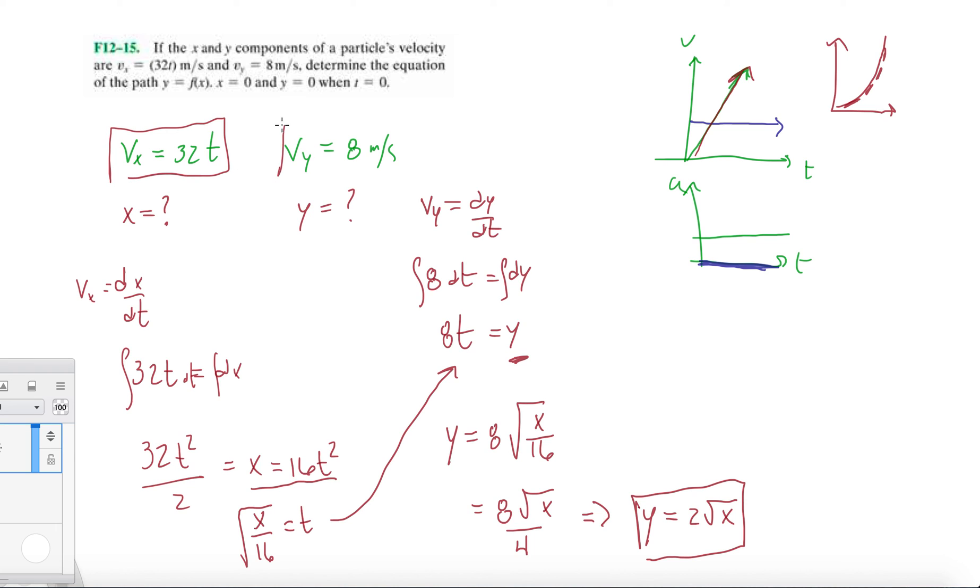Just write down what you know. Write down their differential way of writing the position function, velocity function, for both of these. And then utilize what you already have.